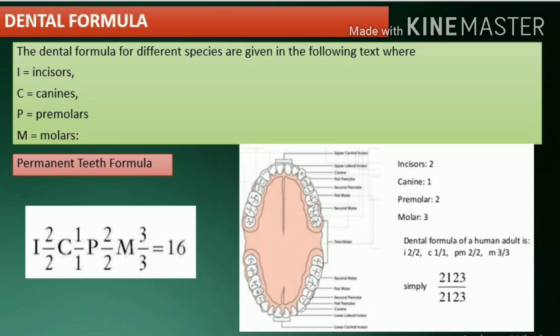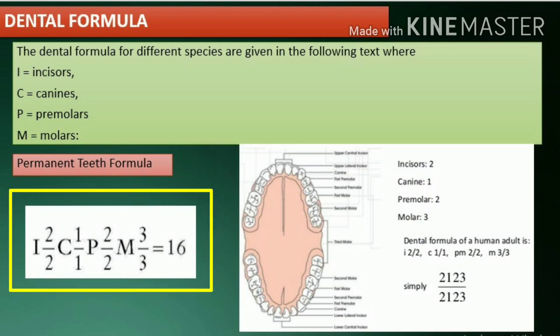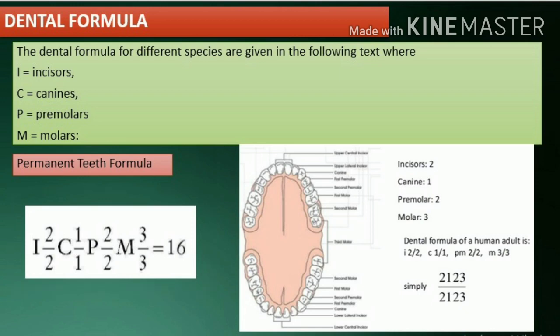For permanent teeth, the teeth present in permanent dentition are incisors, canines, premolars, and molars — 16 teeth are present in each jaw, giving a total of 32 permanent teeth.